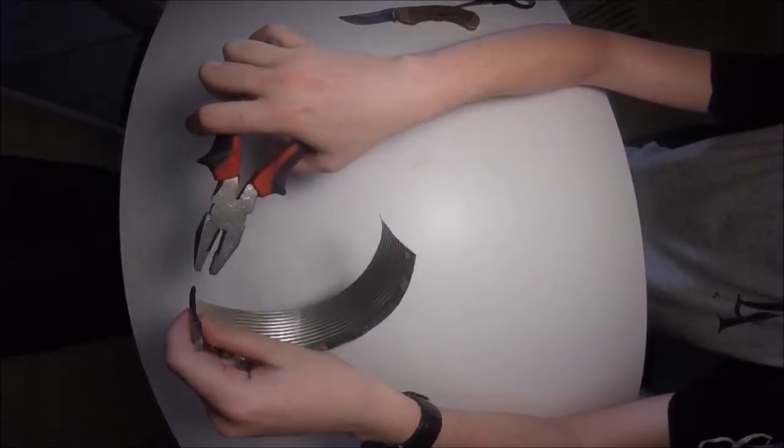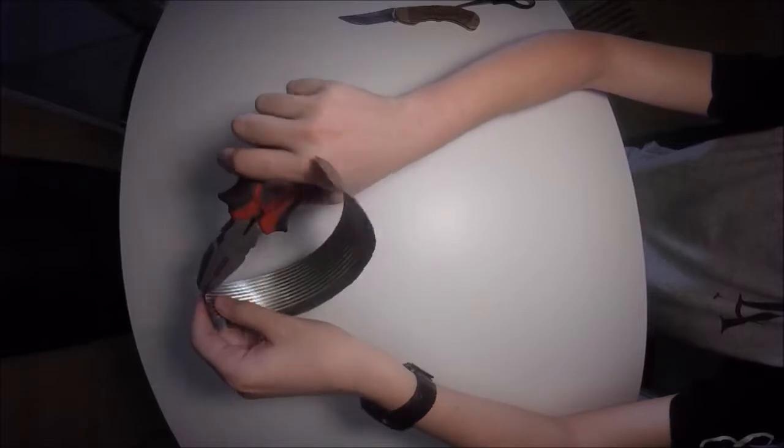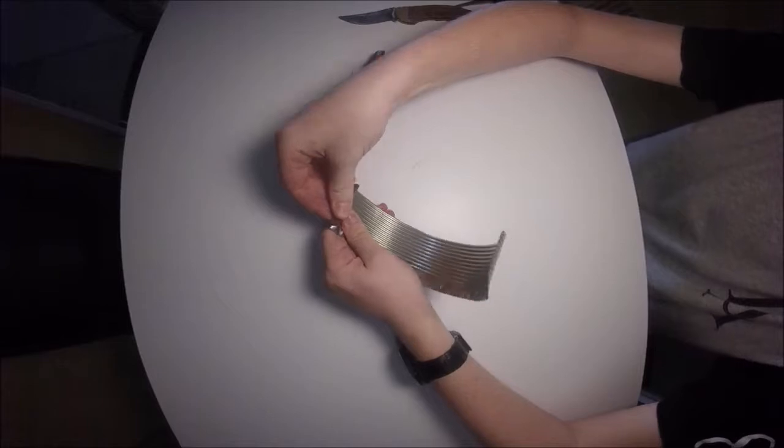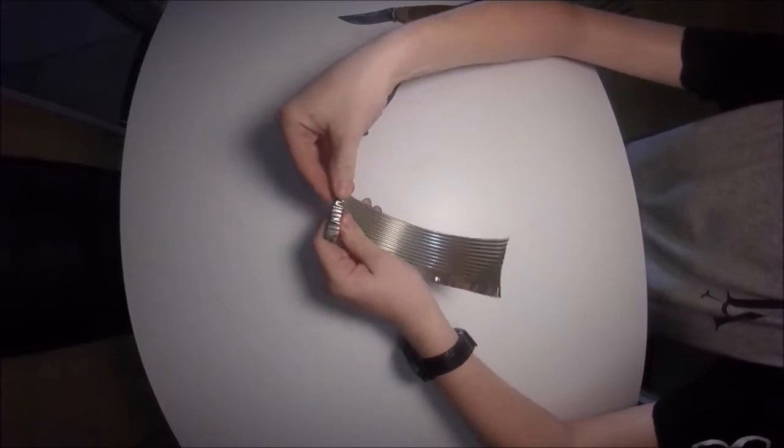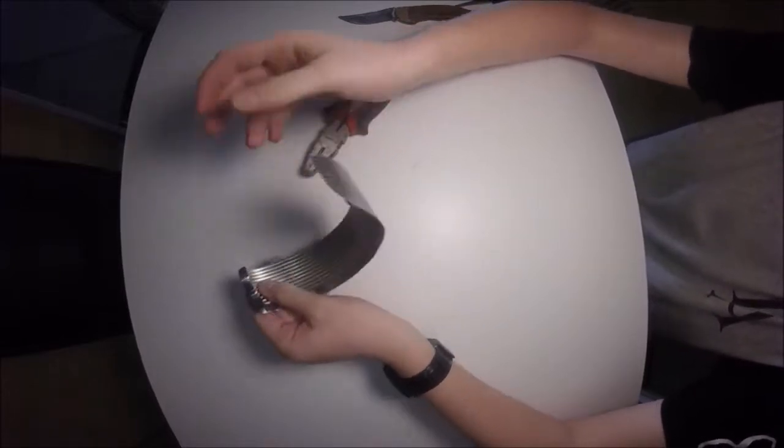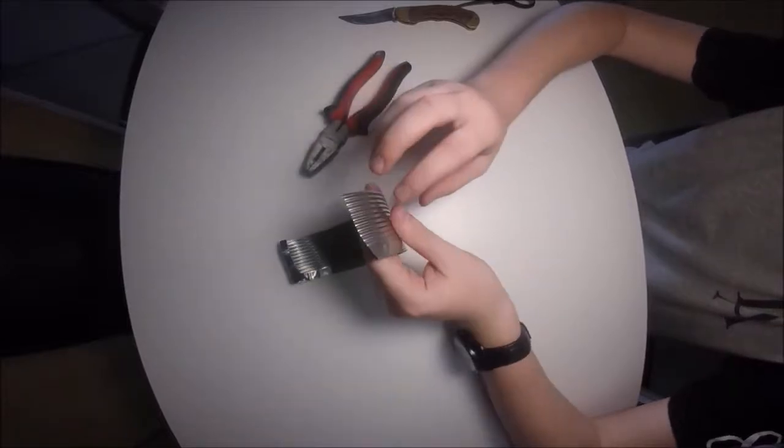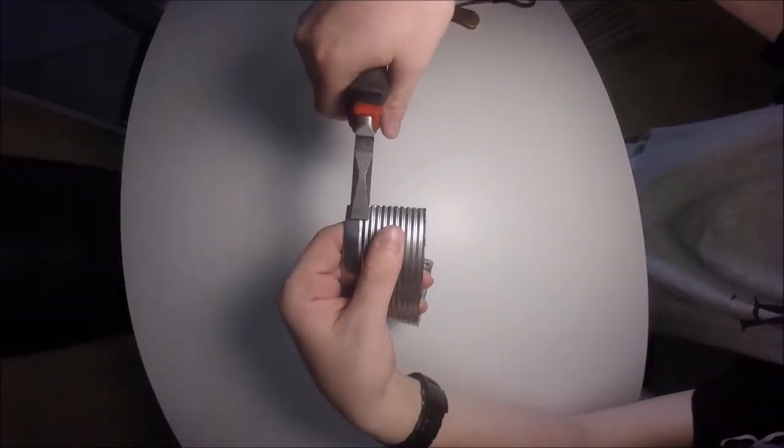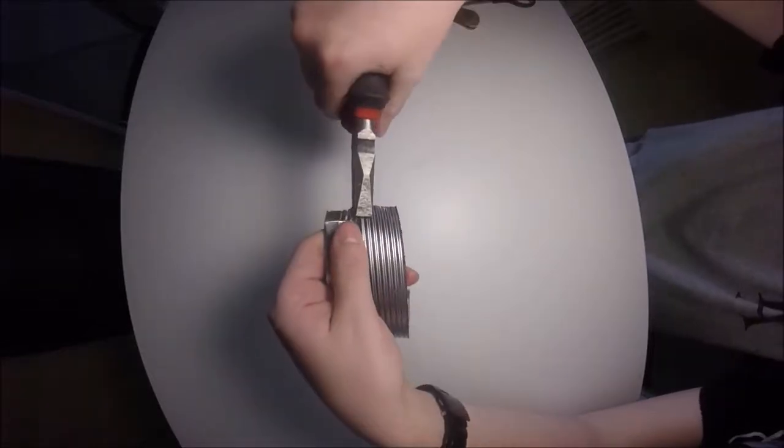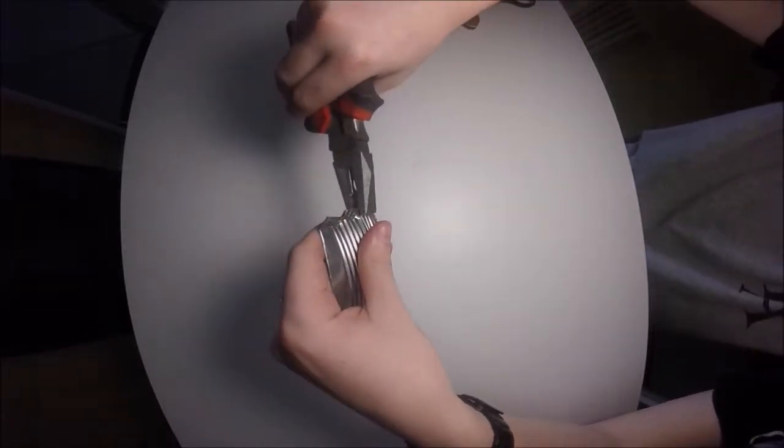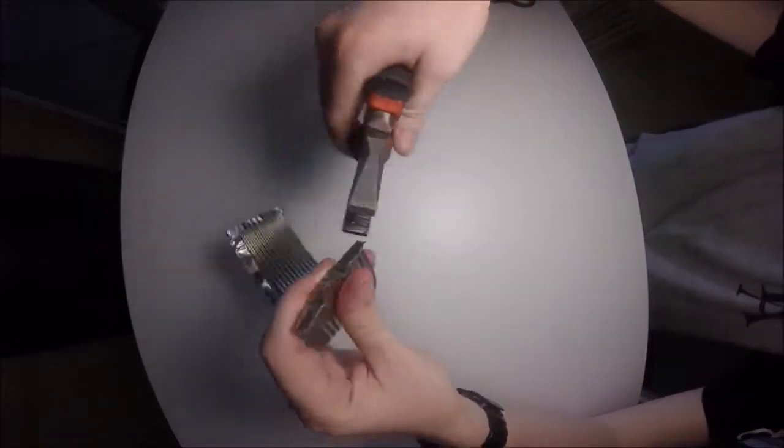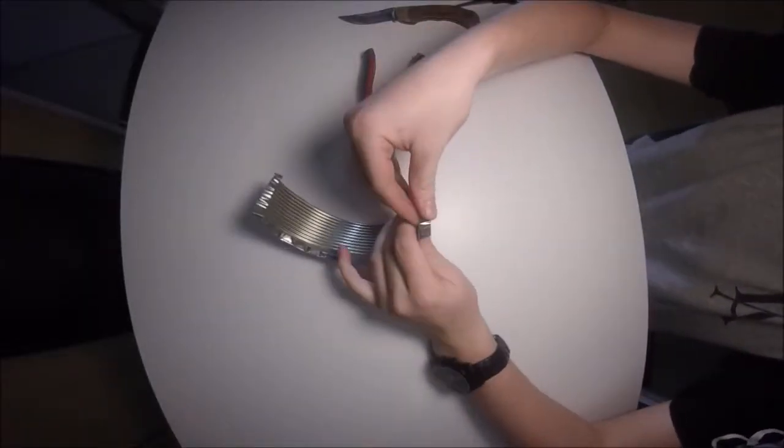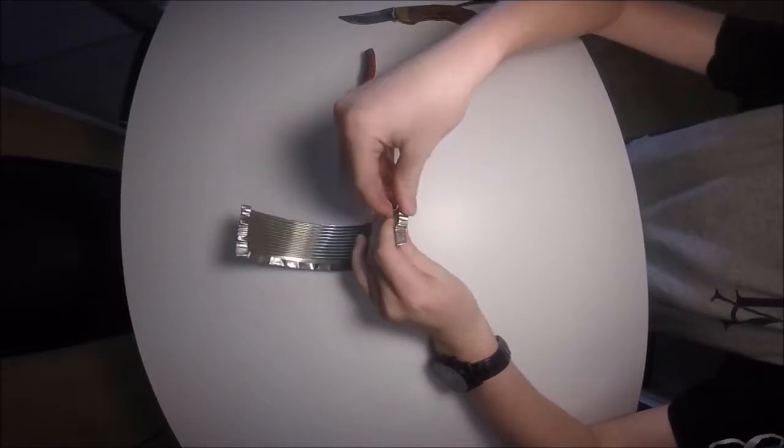You'll notice I'm just using the pliers again just to fold it over, using my fingers once again to push it even further so that it can hook together nicely. On this side, we want to fold this side the opposite way so that when they come together they hook into each other. This one is a bit more difficult because you are folding against the lines.